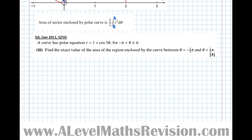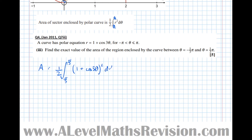Let's do an example. The curve has polar equation r equals one plus cos of three theta, where theta is between minus pi and pi. Find the exact value of the area of the region enclosed by the curve between theta equals minus pi over three and theta equals pi over three. The key is using the formula: we integrate one half r squared with respect to theta between the two limits, so A equals one half times the integral from minus pi over three to pi over three of (one plus cos of three theta) squared d theta.